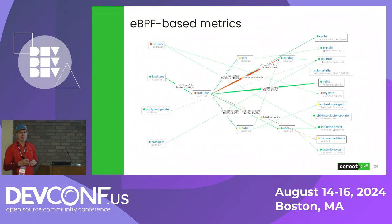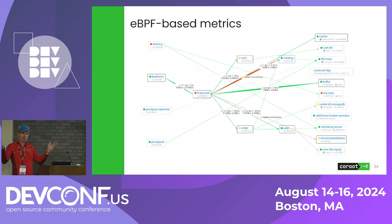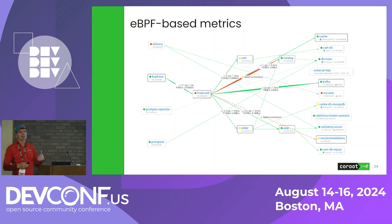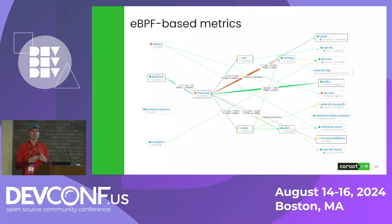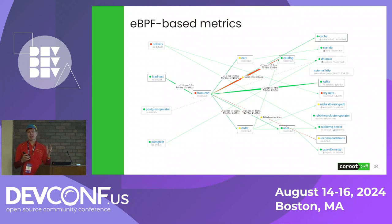Here is an example of what we can get with eBPF — we can automatically build a map of all the services which communicate with each other, see things like number of requests, their latency, and network traffic. We can see cases where connections fail, where a service tries to connect and fails. This doesn't only work in Kubernetes — it works in any environment, including hybrid setups.